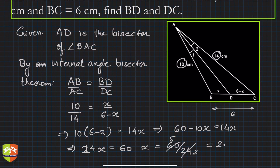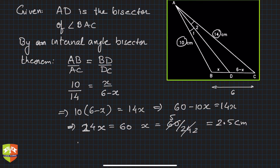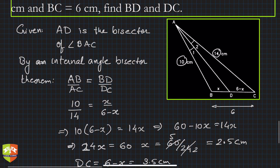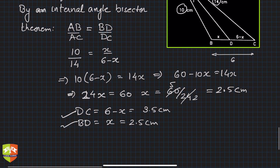So BD is 2.5 centimeter. Clearly DC is equal to 6 minus x, so it will become 3.5 centimeter. These are the two demands of the question, BD and DC. So hence done. Again in these two questions we saw it's very direct application of internal angle bisector theorem.